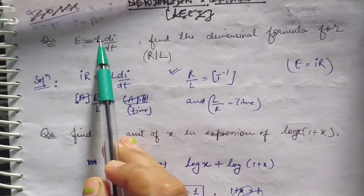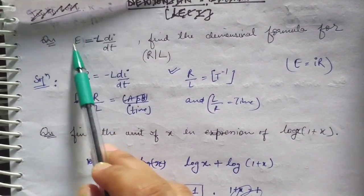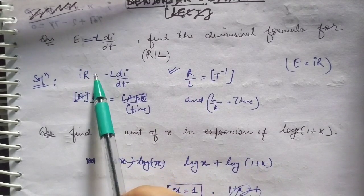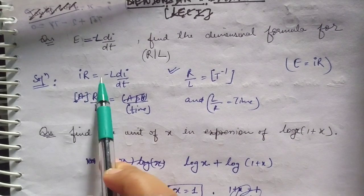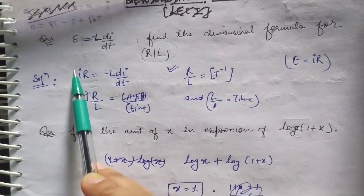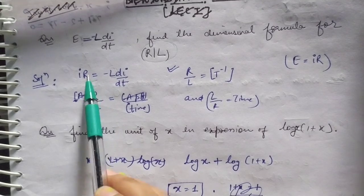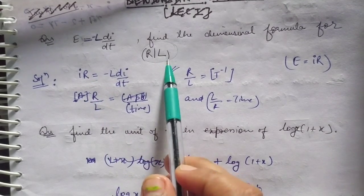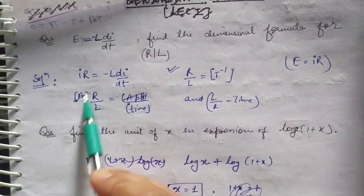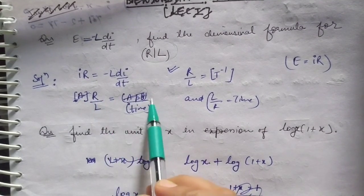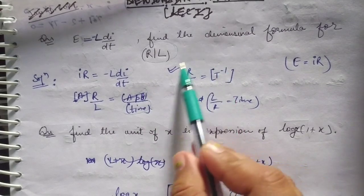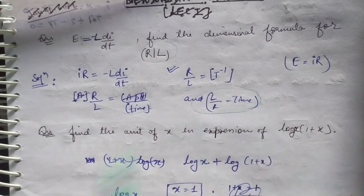Another example: given e = −L·di/dt, using Ohm's law e = iR, we get iR = −L·di/dt. We need to find the dimension of R/L. The unit of i is ampere, di is ampere, and dt is time. So R/L = (1/T), meaning the dimension of R/L is T⁻¹ (time inverse). Conversely, the dimension of L/R is simply T.